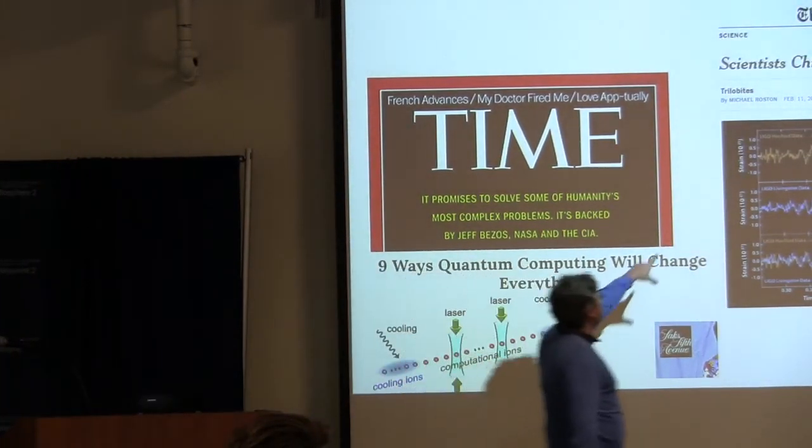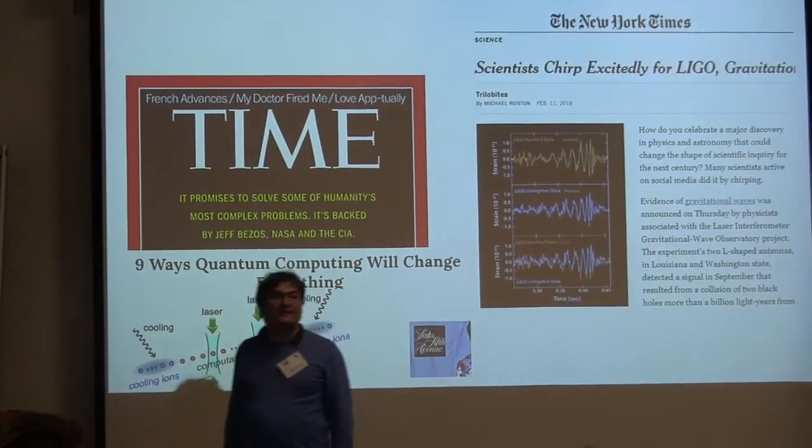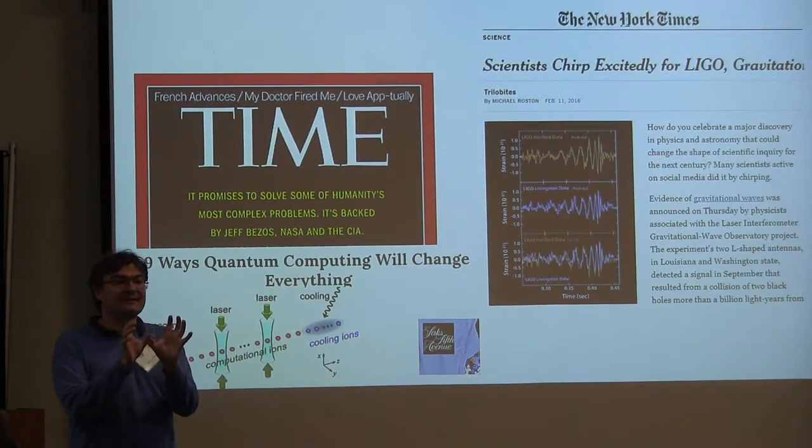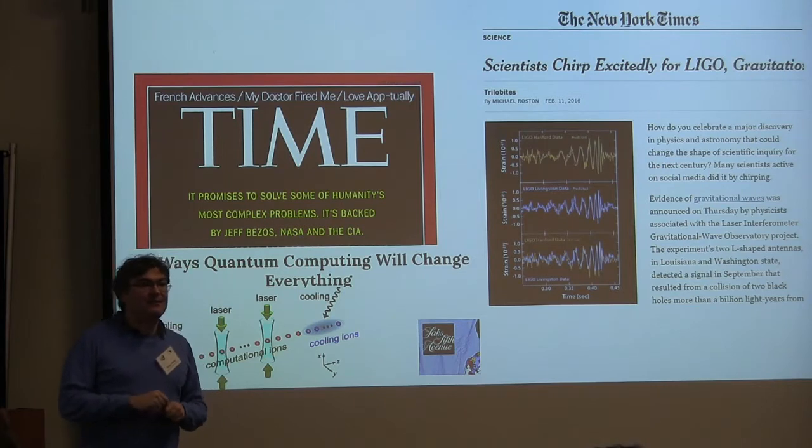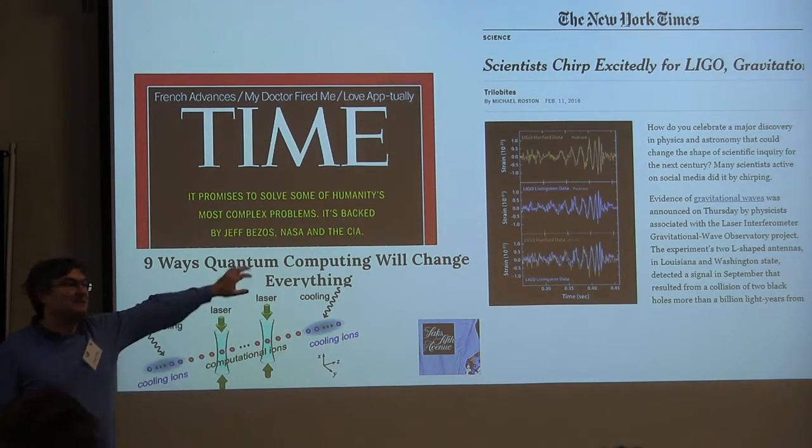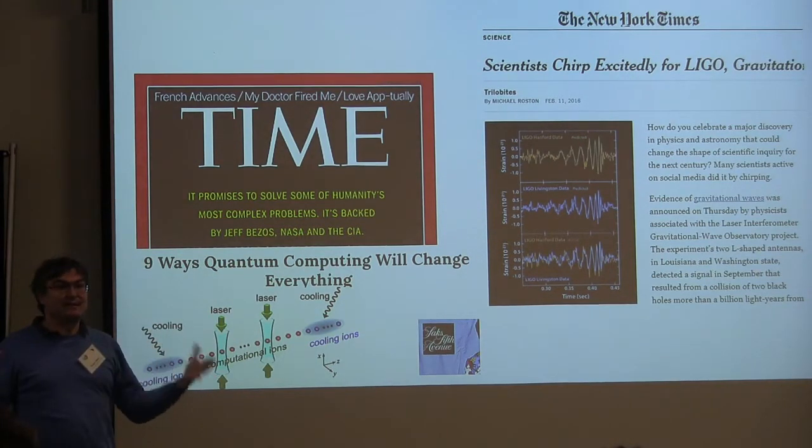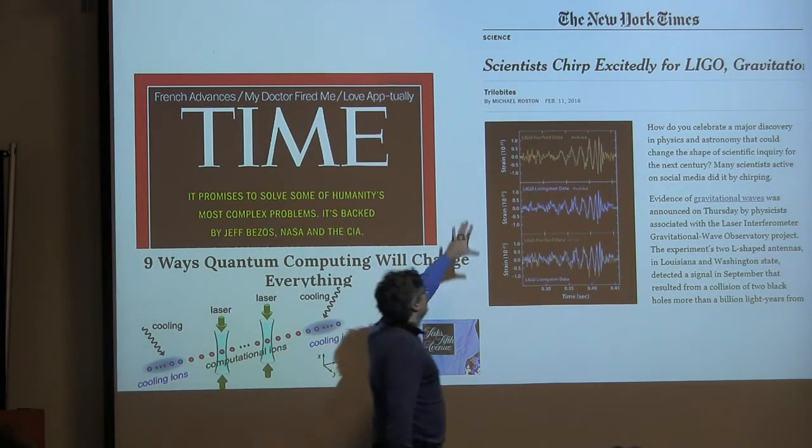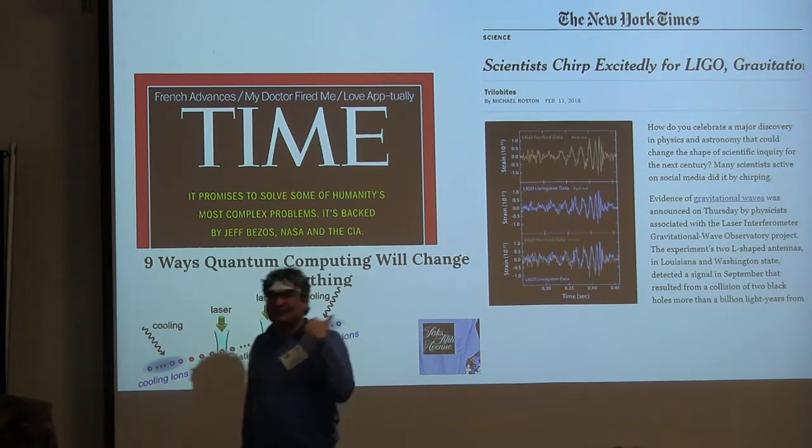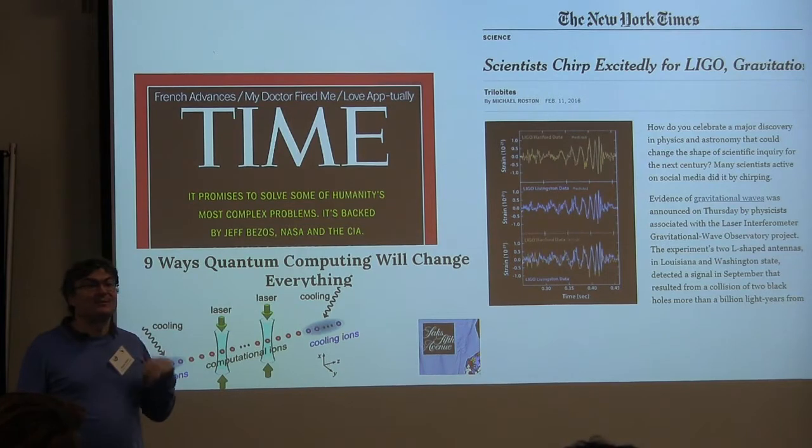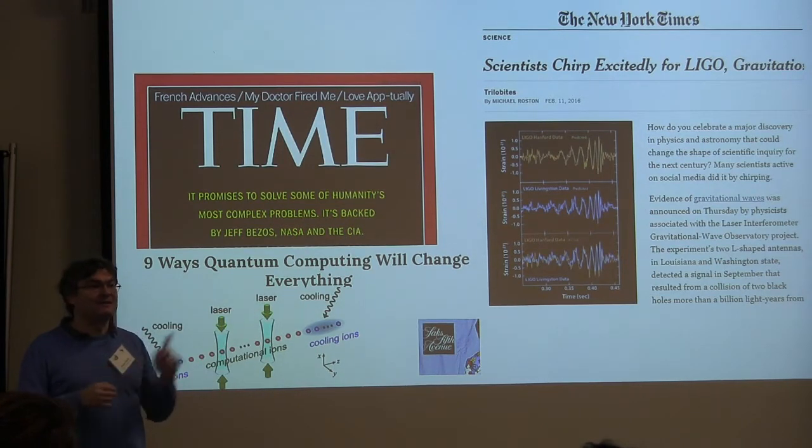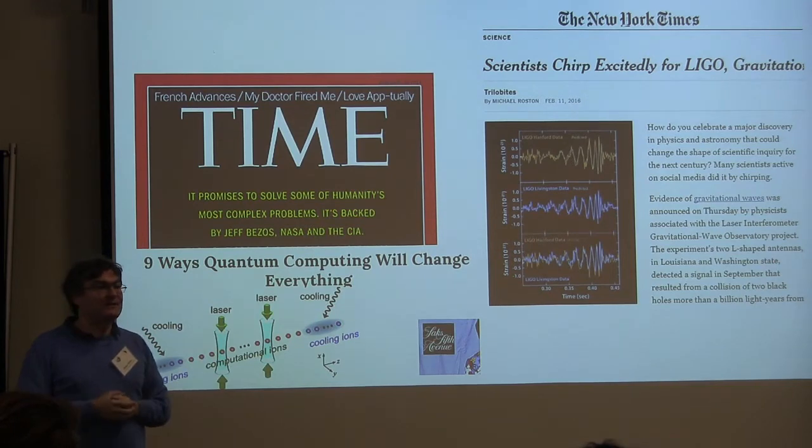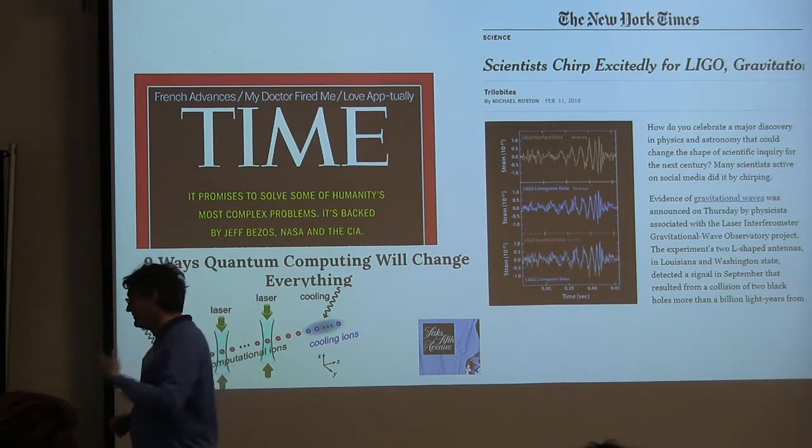They opened up a whole new window to the cosmos. Until recently all information we had about anything not on the ground came to us by electromagnetic radiation. Now we have gravitational radiation. This very first event came from the collision of two thirty solar mass black holes, which before were discarded as something that would be extremely scarce in the universe.